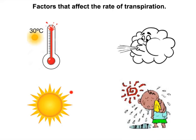So higher light intensity increases the rate of transpiration. Finally, humidity — if the air is very moist, there is a low water potential gradient between the leaf and the air. Higher humidity therefore lowers the water potential gradient, so the rate of transpiration is lower.